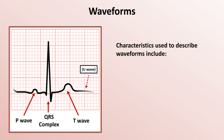Waveforms can be described according to a variety of characteristics. They include duration — for example, an unusually long P-wave may be a sign of left atrial enlargement, or an unusually long QRS complex may be a sign of conduction block in either the right or left bundle branches. Amplitude — an unusually tall P-wave may be a sign of right atrial enlargement, or an unusually tall QRS complex may be a sign of ventricular hypertrophy. And morphology — an inverted P-wave may indicate an origin of a heart rhythm other than the sinus node, or an inverted or biphasic T-wave may indicate ischemia.